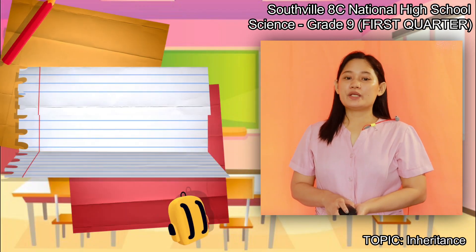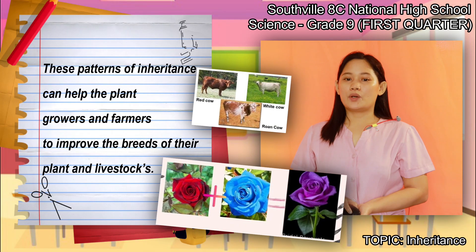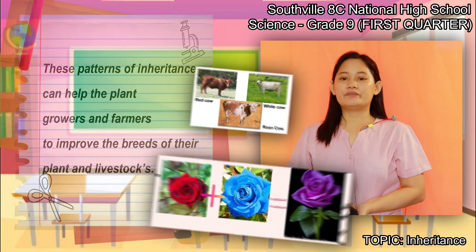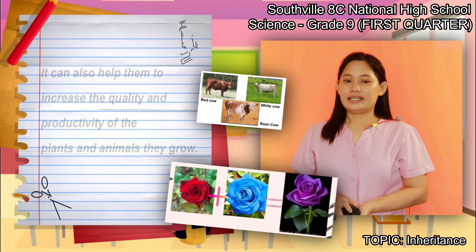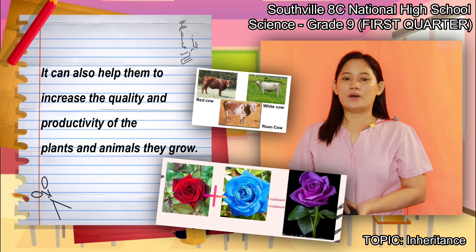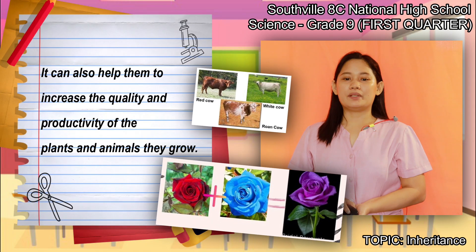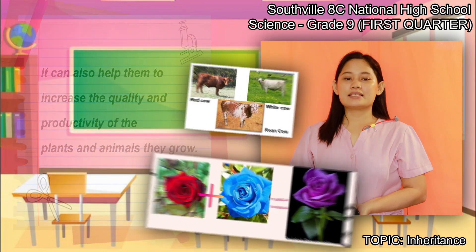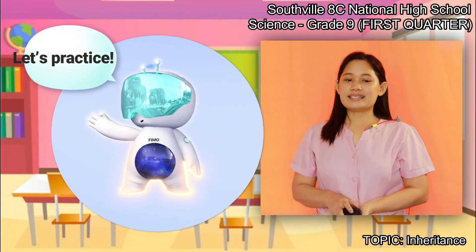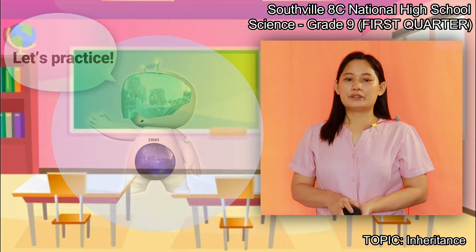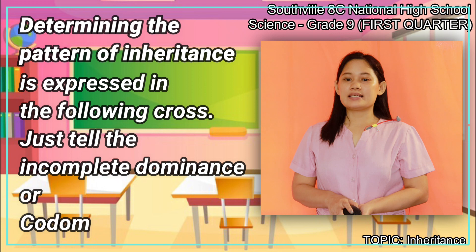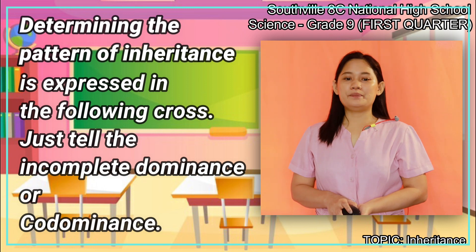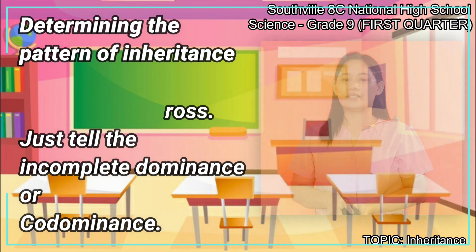These patterns of inheritance can help plant growers and farmers to improve the breeds of their plants and livestock. It can also help them increase the quality and productivity of the plants and animals they grow. Now, let's have a practice: determine the pattern of inheritance expressed in the following cross — identify whether it is incomplete dominance or co-dominance.